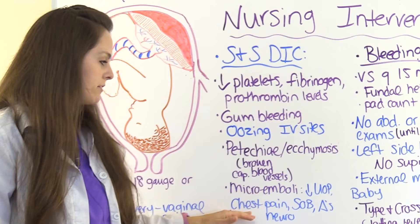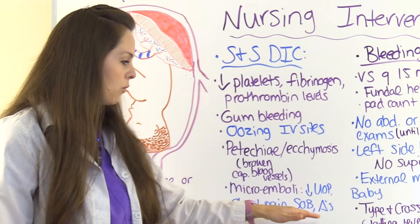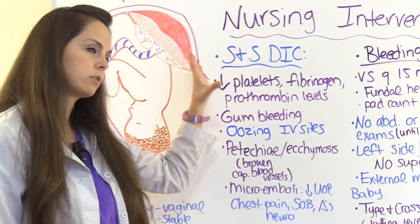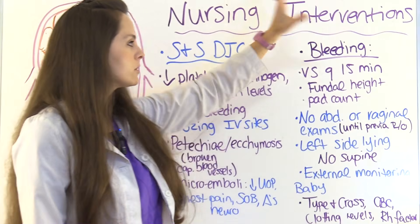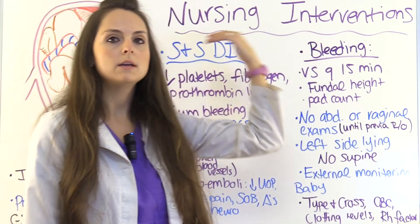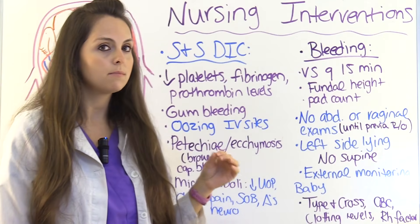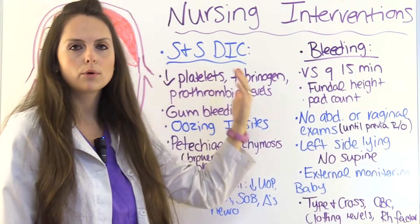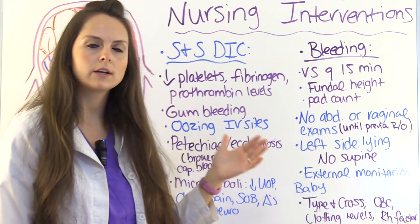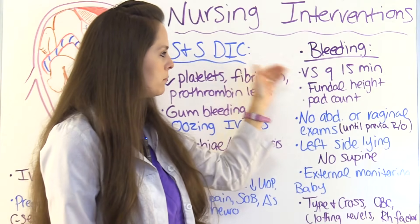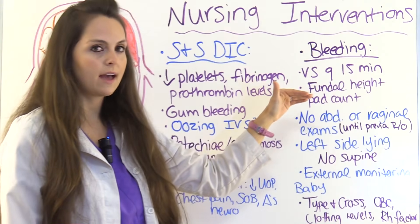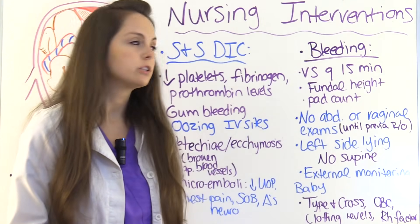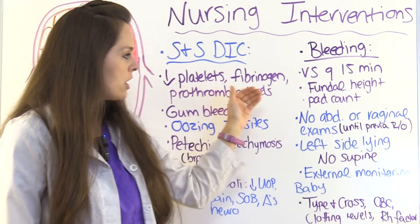Monitor the patient for both concealed and visible bleeding. Keep in mind that bleeding may be concealed, so monitor vital signs per protocol — blood pressure and heart rate — watching for signs of shock. Monitor fundal height regularly, mark it, and check it often. Perform a pad count if bleeding is visible to quantify blood loss. Avoid abdominal or vaginal exams until an ultrasound is done or the physician gives clearance, to rule out placenta previa.